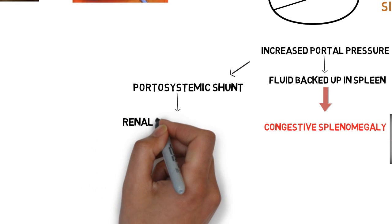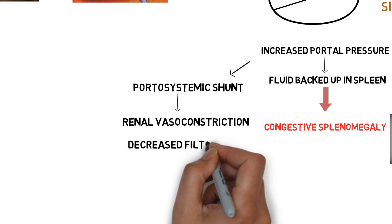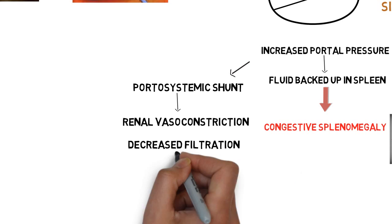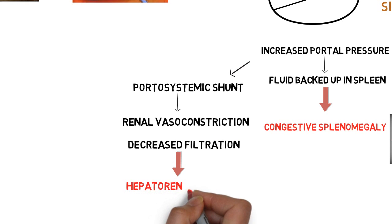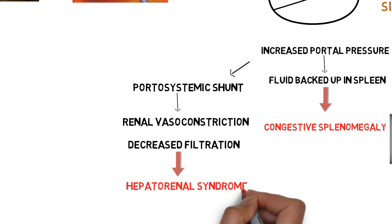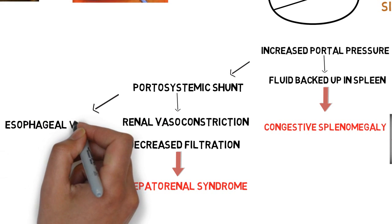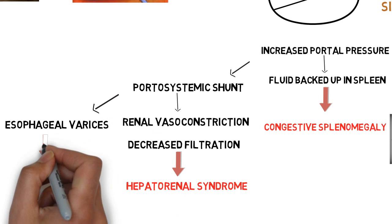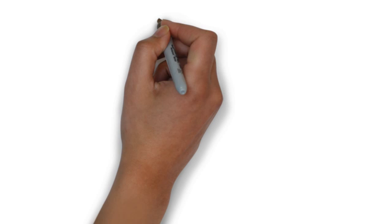These changes also cause increased renal vasoconstriction, which causes decreased filtration, ultimately leading to hepatorenal failure where kidney failure follows liver failure. Also, this portosystemic shunt can cause esophageal varices, which presents as hematemesis.